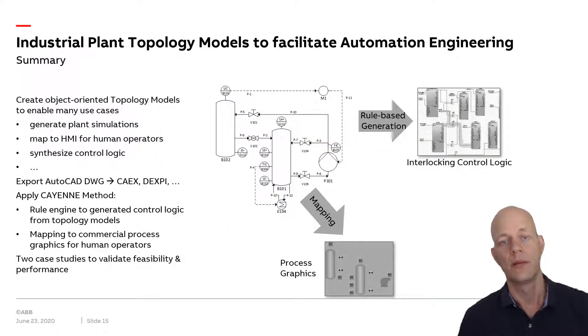Summarizing, I presented industrial plant topology models to facilitate automation engineering. The main idea is to create object-oriented topology models instead of CAD drawings that cannot be processed algorithmically. With upcoming standards like the DEXPI standard, they can be produced directly from CAD tools. We exploited that method to generate interlocking logic using a rule engine and process graphics for human operators. In two case studies, we showed both the feasibility and scalability of the approach. In the future, we want to extend that to cover simulation models and more rules.